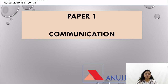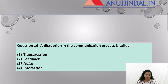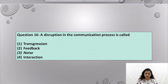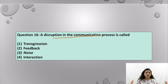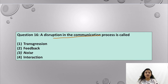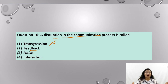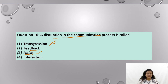Question 16: A disruption in the communication process is called what? Communication should flow easily from sender to receiver without any disruption, so the intent of the message is maintained. Transgression is a lawful offense — not the answer. Feedback is what the receiver gives back to the sender — also not the disruption. In the communication process, the sender encodes a message, sends it to the receiver, who decodes it and gives feedback. Noise is definitely a disruption in the communication process.